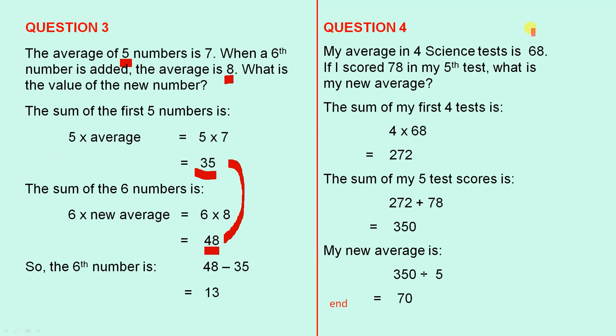Question 4: My average in 4 science tests is 68. If I scored 78 in my 5th test, what is my new average? So the sum of my first 4 tests is 4 times 68, because there are 4 tests and I averaged 68. So the sum of the first 4 tests is 272. Now, the sum of my 5 test scores is 272 plus 78, because I scored 78 in the 5th test. So that means we have 350 for the sum of the first 5 test scores.